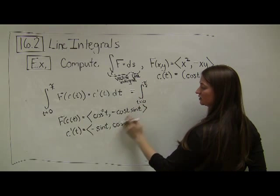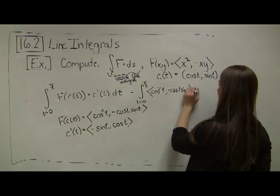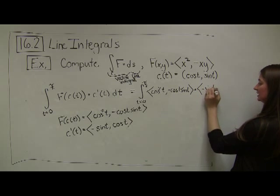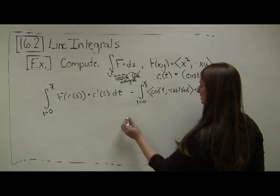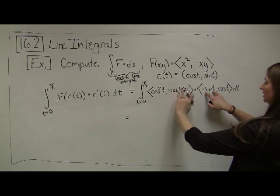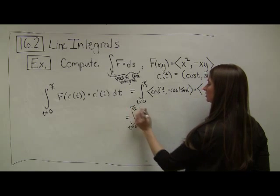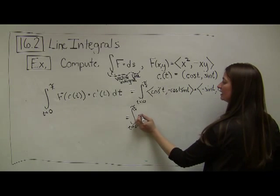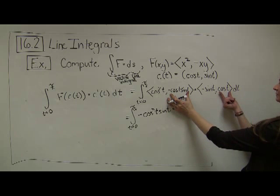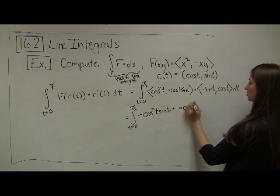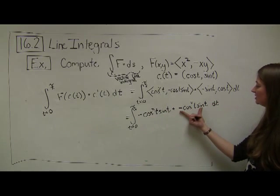The integral is the vector (cosine squared t, negative cosine t sine t) dotted with (negative sine t, cosine t) dt. For dot products, it's the first terms multiplied together plus the second terms multiplied together. This gives the integral from 0 to pi over 2 of: negative cosine squared t sine t, plus negative cosine squared t sine t.